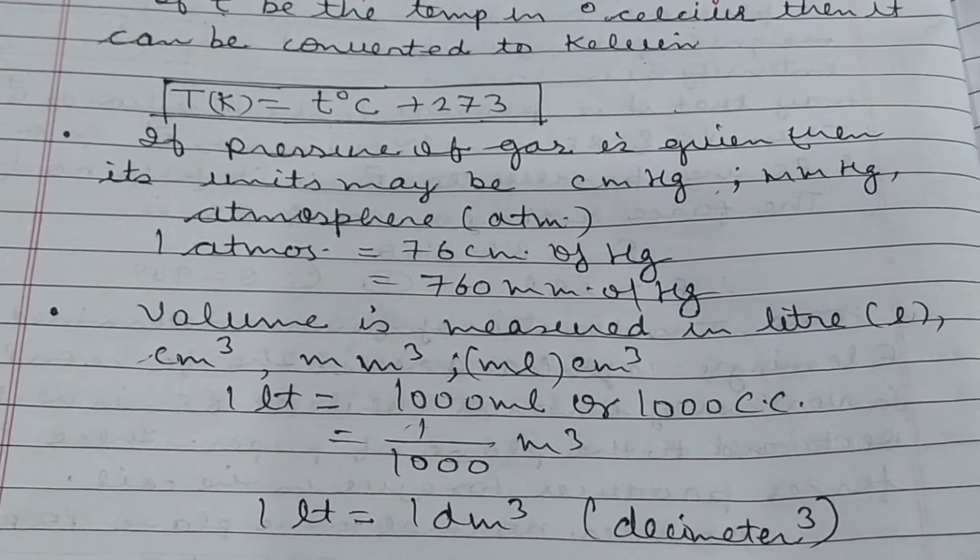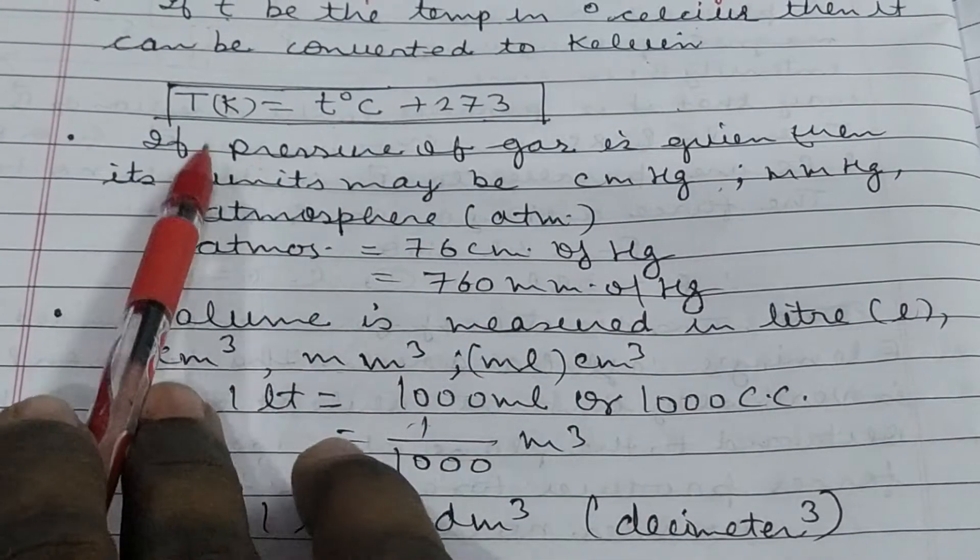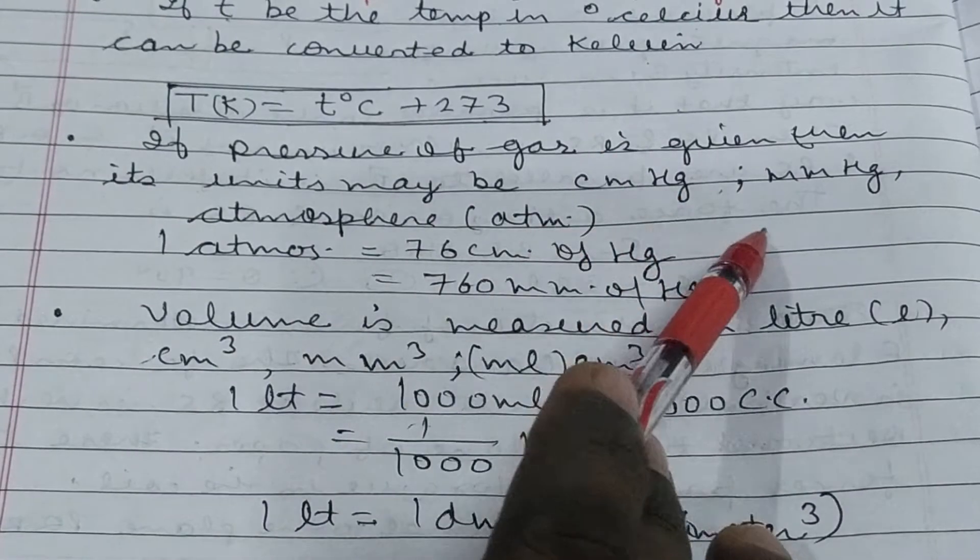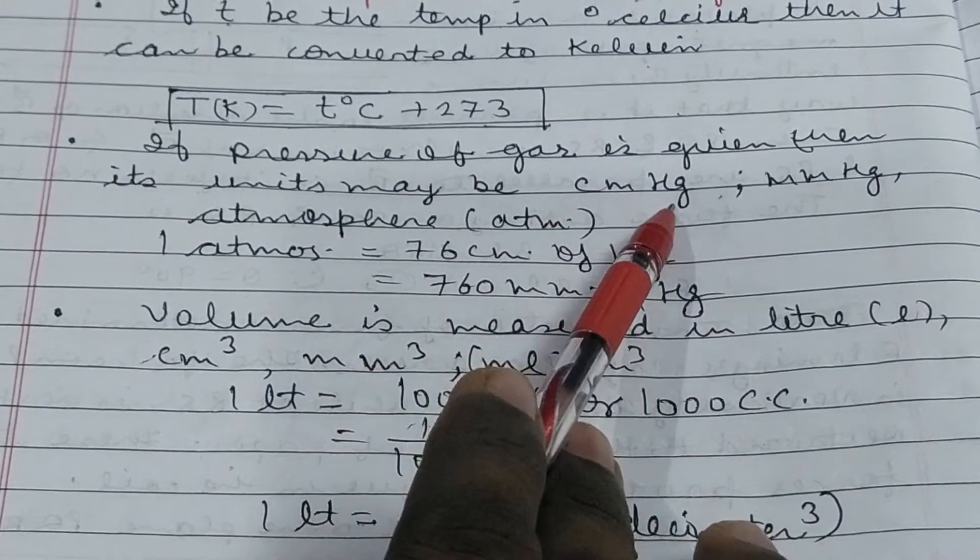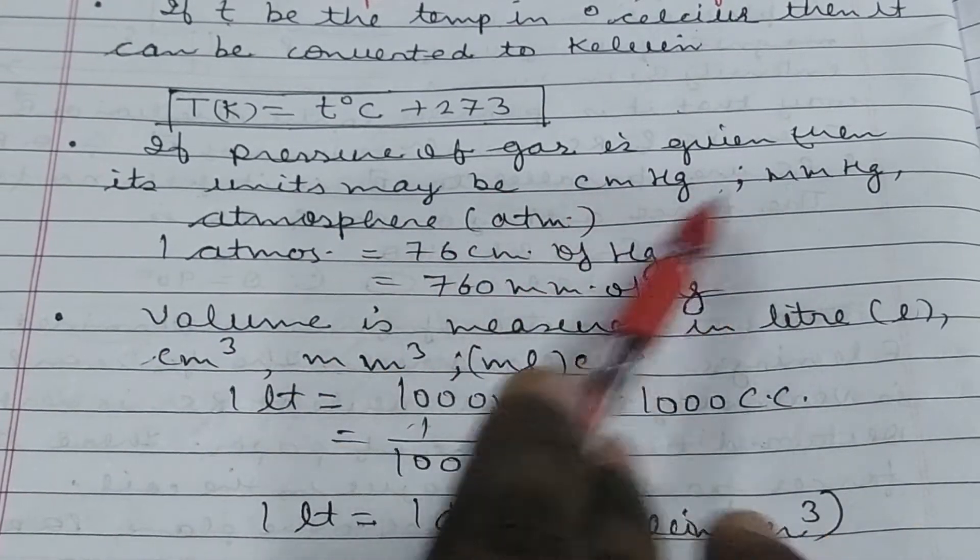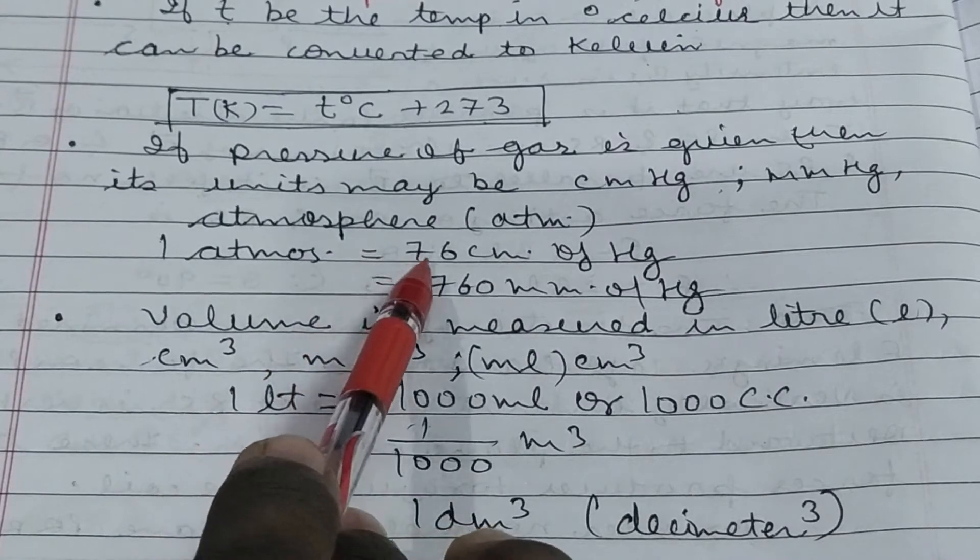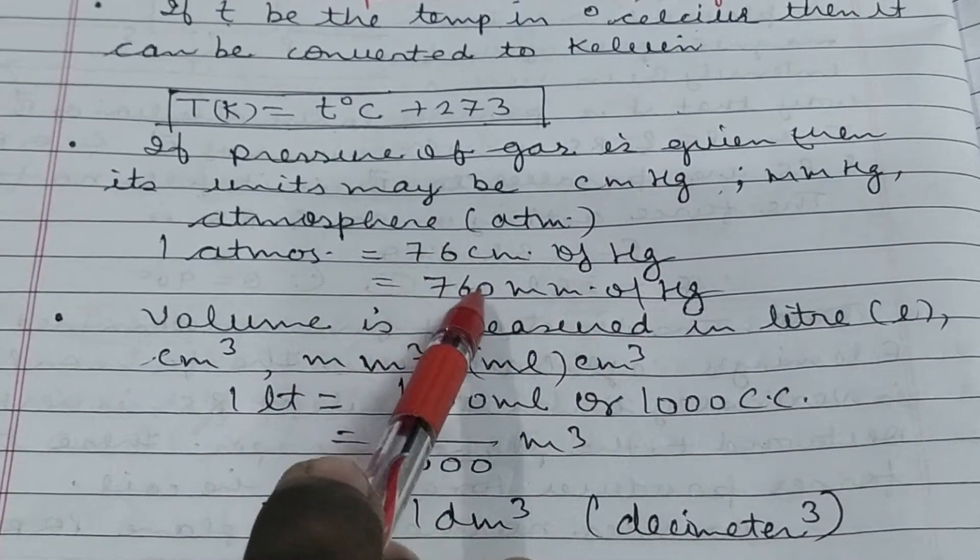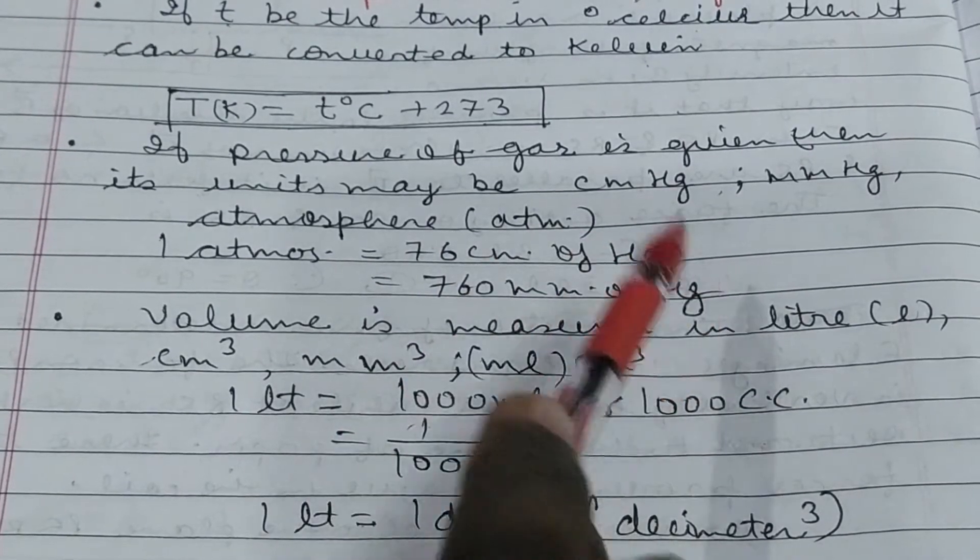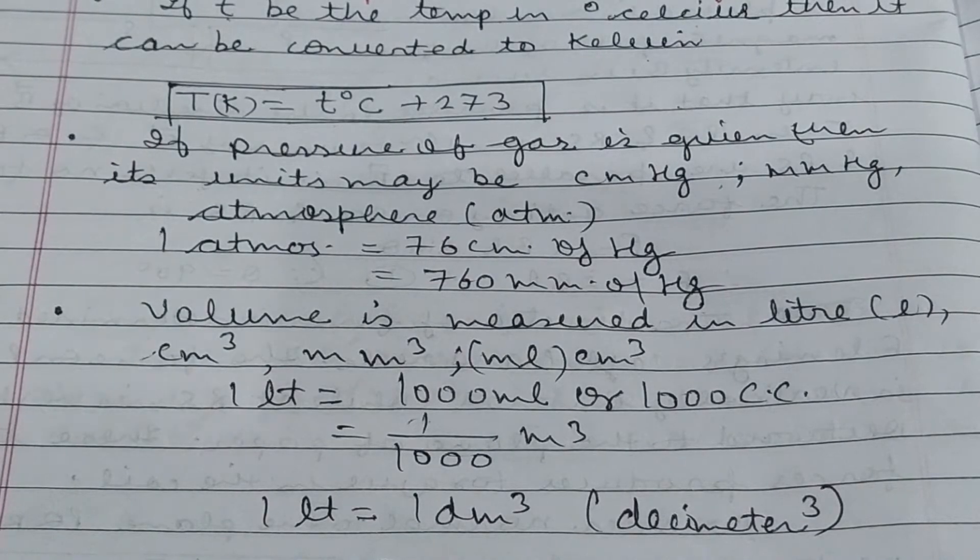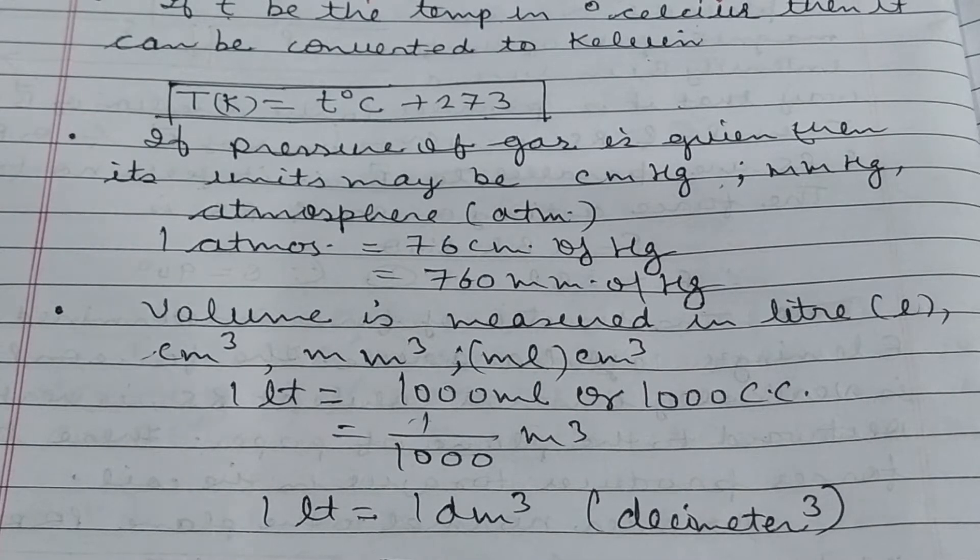Similarly, units of pressure and volume are given. Pressure is mainly expressed in terms of length of mercury column like centimeter mercury, millimeter mercury or atmosphere. This was studied in chapter pressure in class 9 physics.